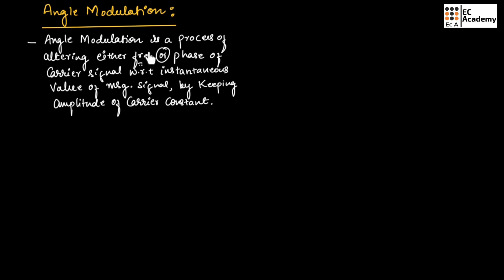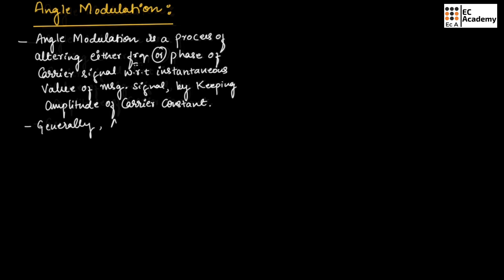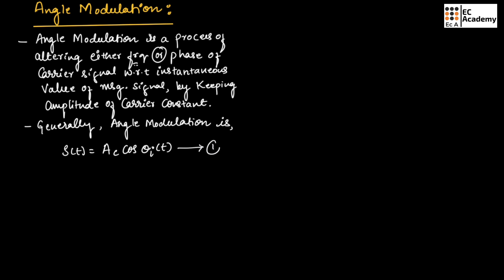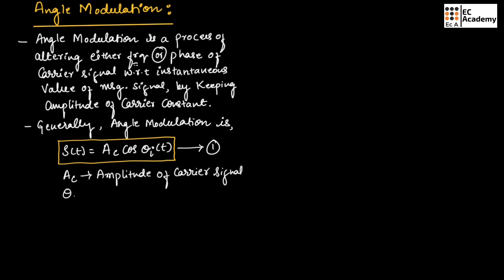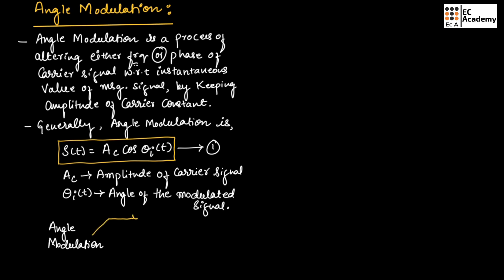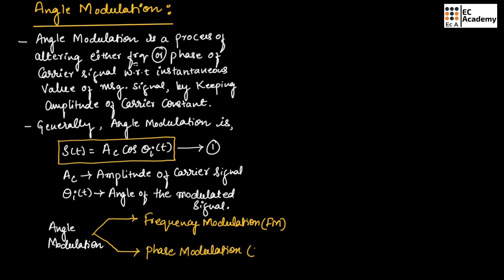If we alter the frequency or phase of the carrier signal with respect to the instantaneous value of the message signal, by keeping the amplitude of the carrier signal constant, it is known as angle modulation. Generally, angle modulation can be expressed as S(t) = Ac·cos(θi(t)), which we call equation number 1. Here, Ac is the amplitude of the carrier signal and θi(t) is the angle of the modulated signal. Angle modulation can be further divided into two types: frequency modulation, generally known as FM, and phase modulation, generally known as PM.